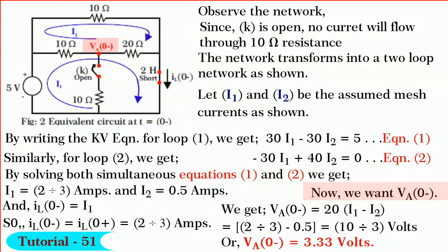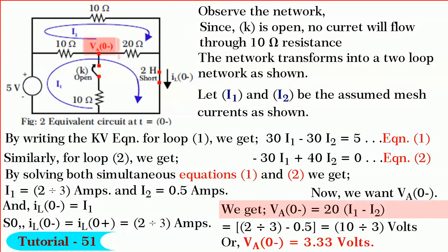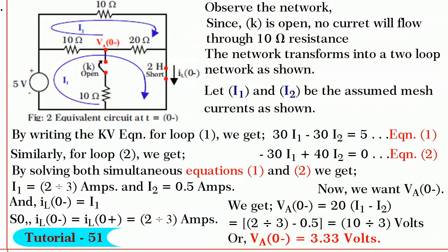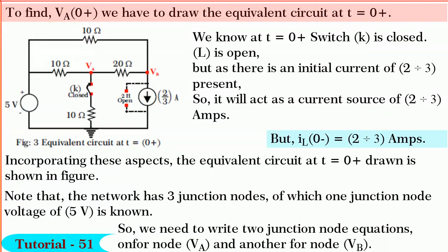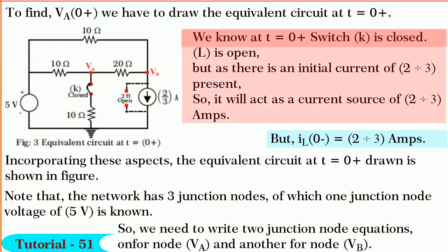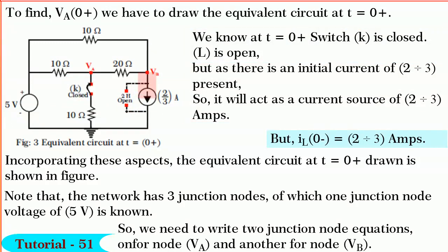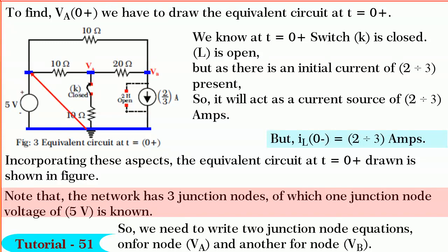Now we want φA(0-). By writing the Kirchhoff's voltage equation from the reference, we get φA(0-) equals 20 times (I1 minus I2). Substituting the values and solving, we get φA(0-) equals 10/3 volts or 3.33 volts. To find φA(0+), we have to draw the equivalent circuit at t equals 0 plus. At t equals 0 plus, the switch is closed and L is open. But there is an initial current of 2/3 amperes present in the inductance, so the inductance will behave as a current source of 2/3 amperes as shown.